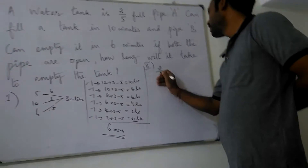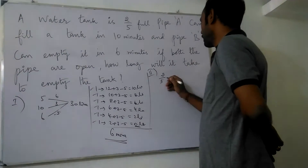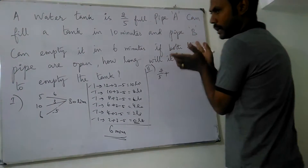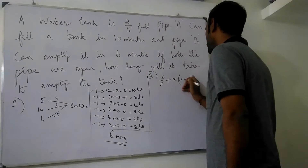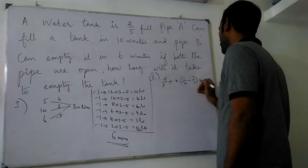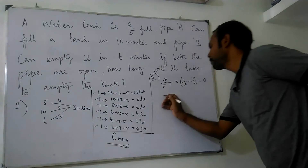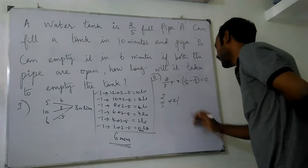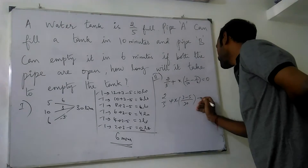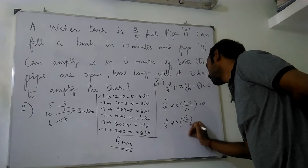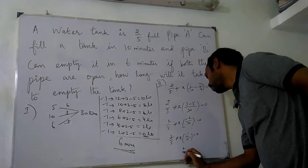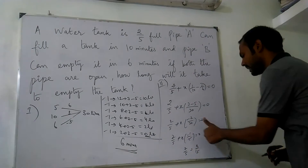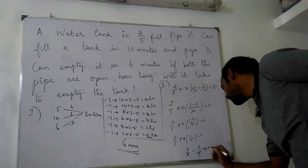The 2nd method is the mathematical way. The tank is already 2/5 full. So: 2/5 + x × (-2/12) = 0. Solving: minus 1/15 divided by 2, so 2/5 equals x/15. Therefore x is equal to 2 × 3 = 6 minutes.